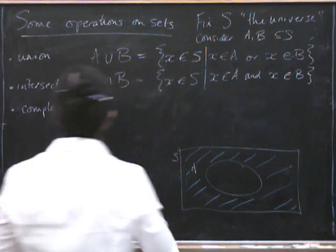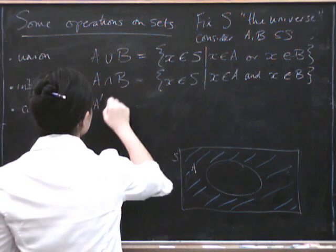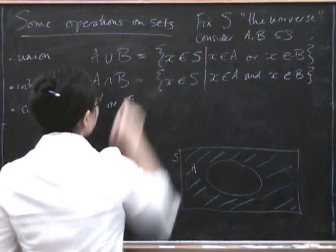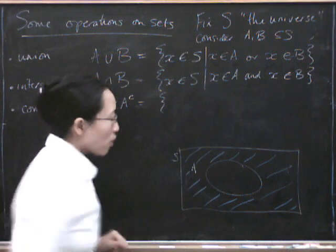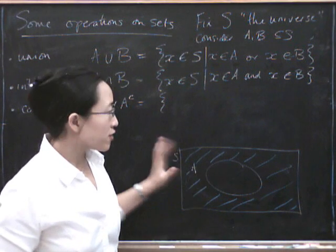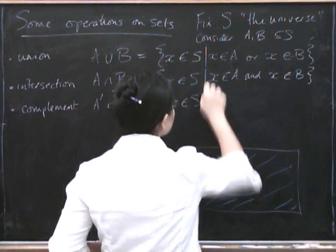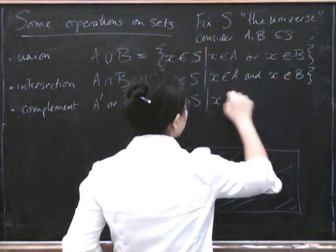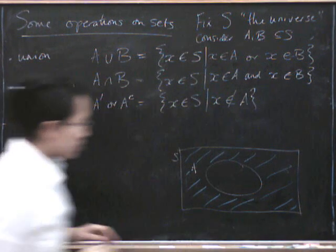So how do we say that formally? We write it as A prime, or sometimes A with an upper C to mean complement. And that is all the elements of the universe that are not in A. So that's X in S, such that X is not in A.